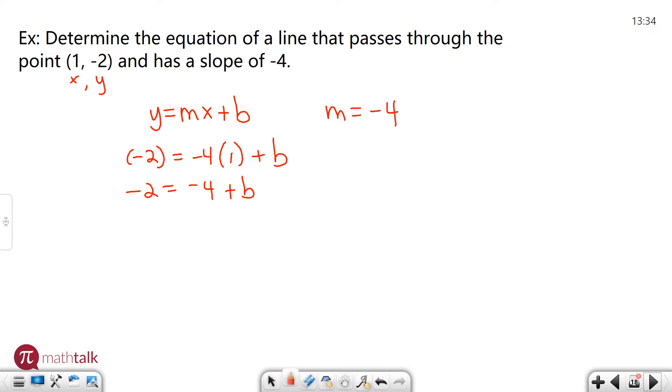One step equation. I need to get rid of the negative four by adding it to both sides and I get two equals b.